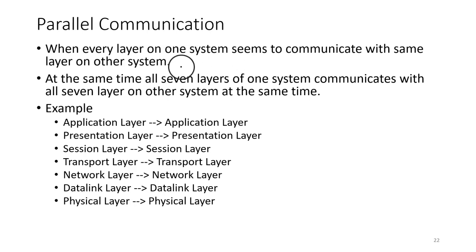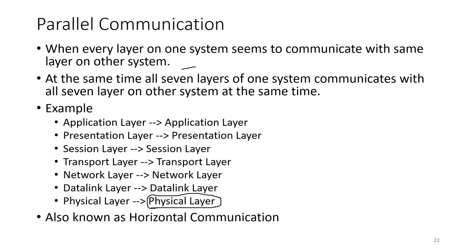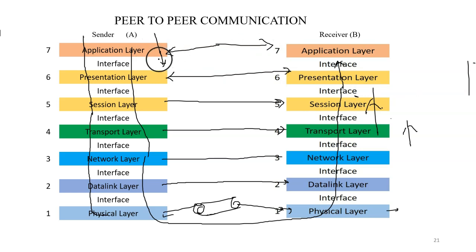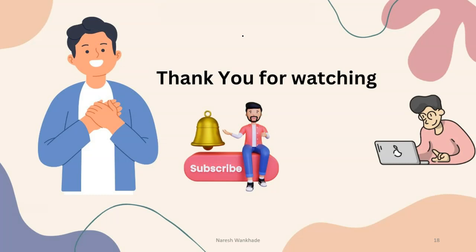In the physical layer, there is a direct connection between the physical layer at the sender side and the physical layer at the receiver side. Parallel communication is also known as horizontal communication. Like peer-to-peer communication, parallel communication is also virtual — the actual flow of data goes from top to bottom at the sender side, and at the receiver side the data flows from bottom to top. There is a seeming direct communication between system A and system B across all seven layers. Both peer-to-peer communication and parallel communication are virtual communication. Thank you for watching — for more such videos, stay connected with this channel.